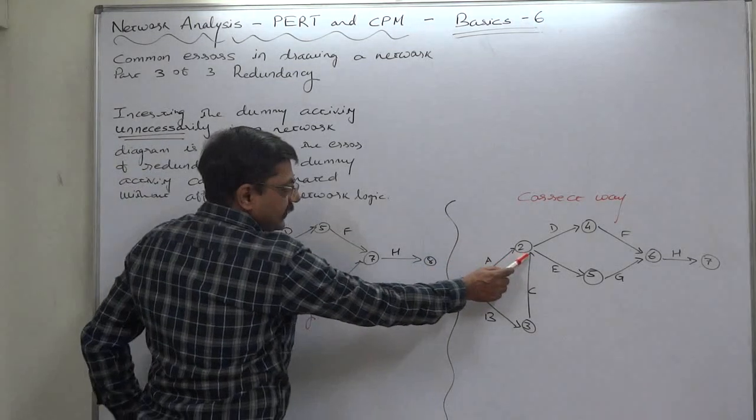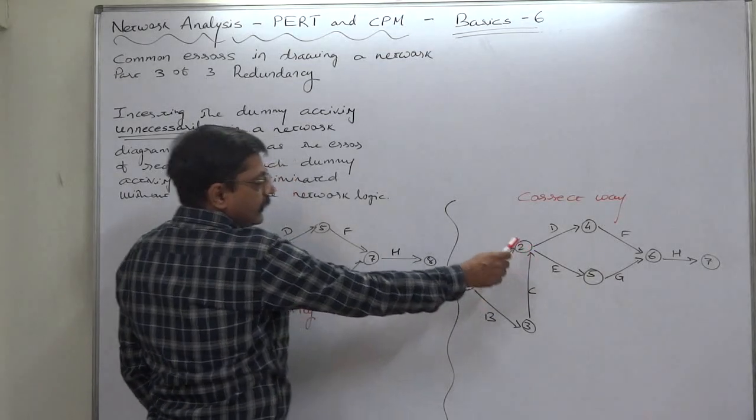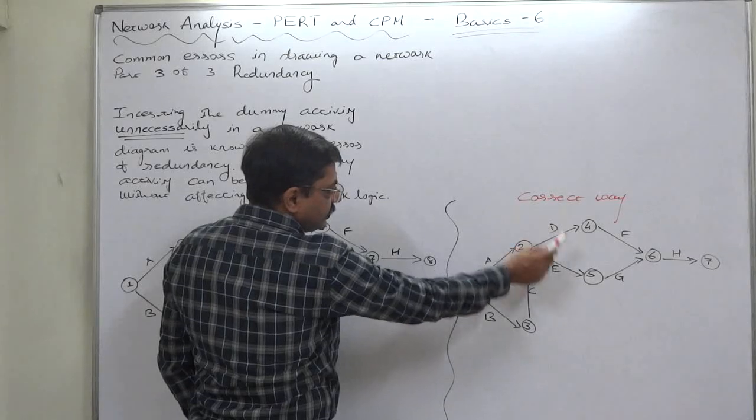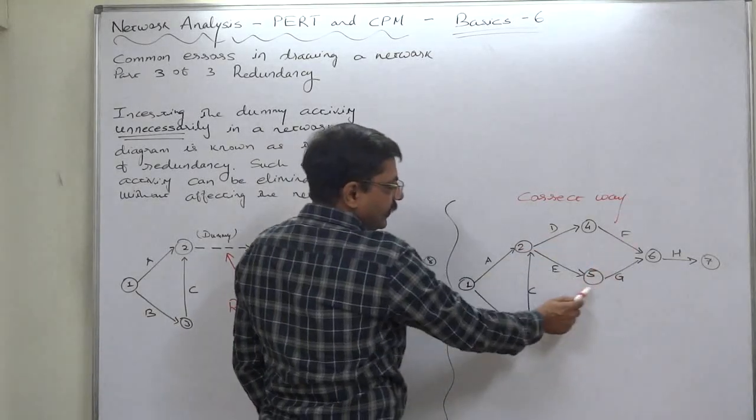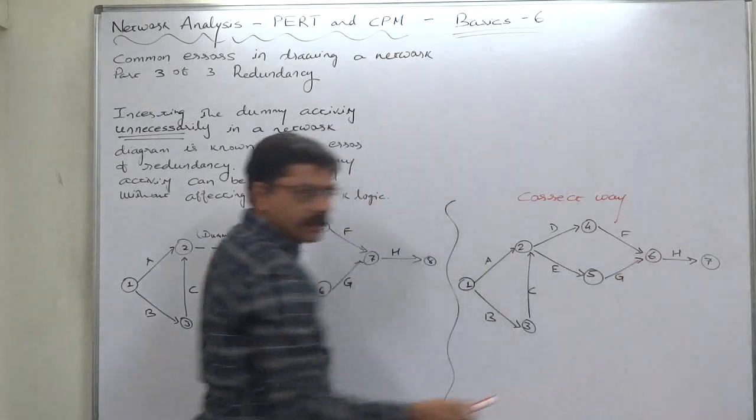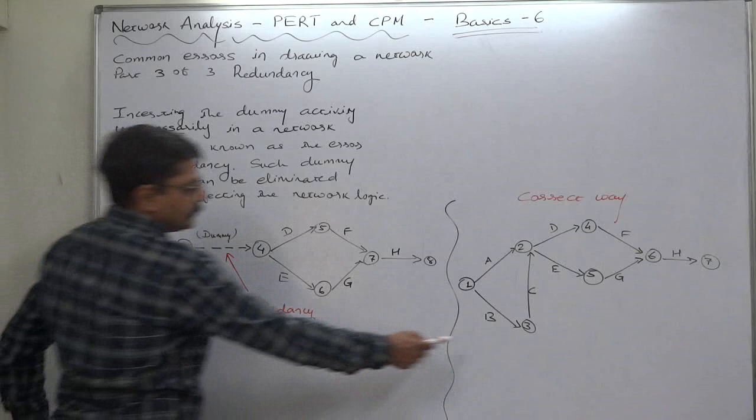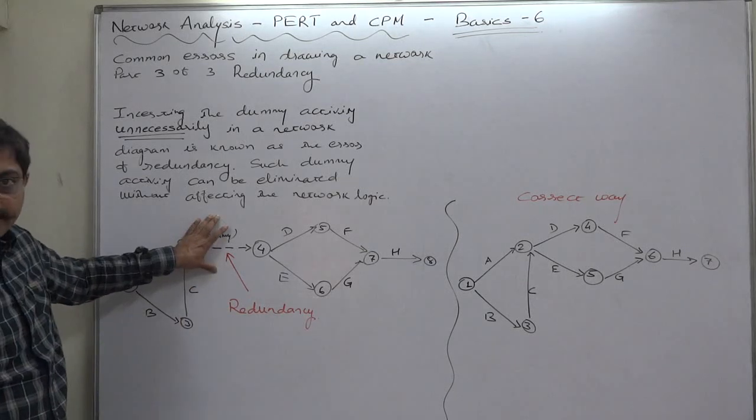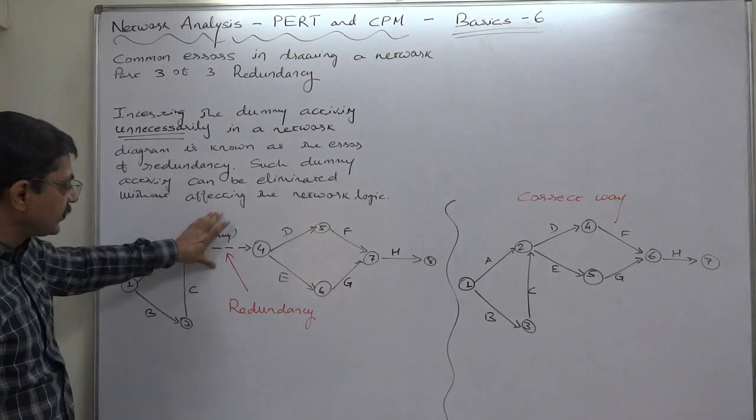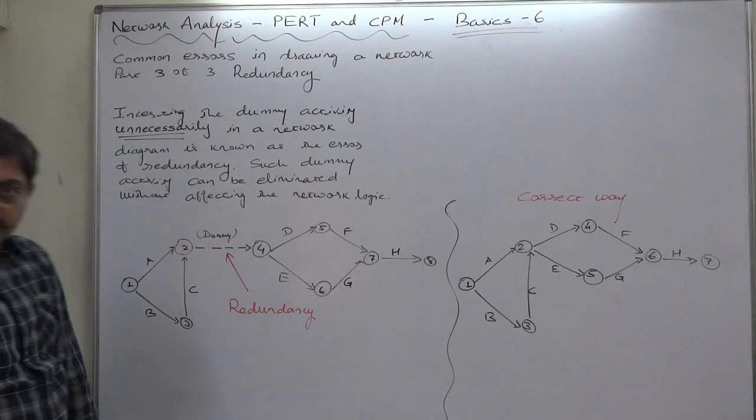A and C both become predecessors of activities D and E. D becomes predecessor of F, E becomes predecessor of G. Both are predecessors of H and so on. You can see that without affecting the logic of the network we have removed this dummy. Inserting this kind of unnecessary dummy is called the error of redundancy.